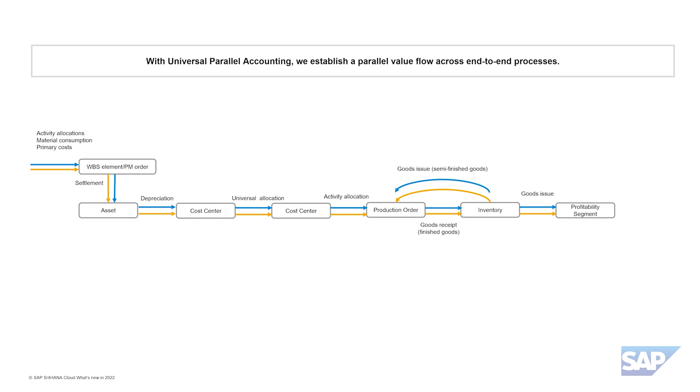This does not mean that multiple valuations cannot be tracked, but it's not done in a harmonized way, and not in real time. As a result, the parallel valuation of assets, inventory items, and so on, are not connected end-to-end. With Universal Parallel Accounting in SAP S/4HANA Cloud, we establish a parallel value flow across the end-to-end process. This results in the elimination of the breakpoint we saw before when the asset was being consumed in the production process. By introducing the ledger as the single harmonized way to handle parallel valuations end-to-end, a universal solution for the general ledger and all sub-ledgers — resulting in a fully aligned financial and management accounting — is provided, including currency management.